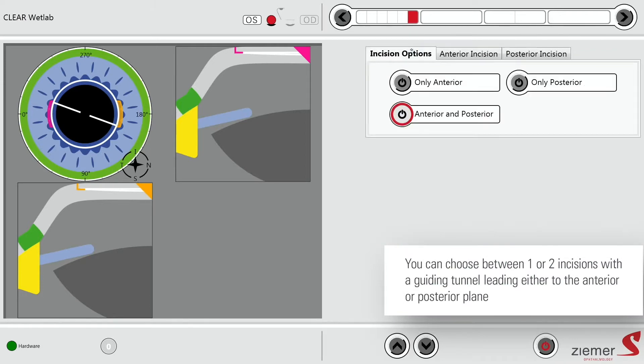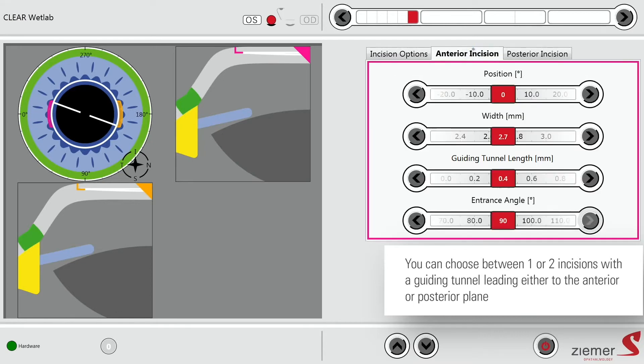We offer with the Z8 the option to have one or two incisions. If I choose one incision, I can decide to have it leading to the anterior plane or to the posterior plane. If I have the two, I will have then one incision for each plane. For each incision, I have some settings. I have selected a width of 2.7 mm and then a guiding tunnel length of 0.4 mm.